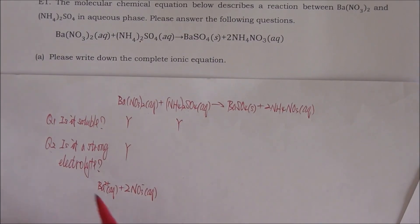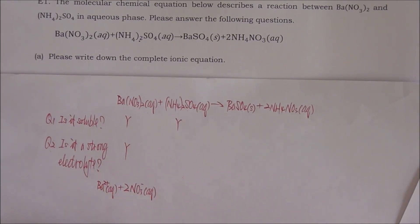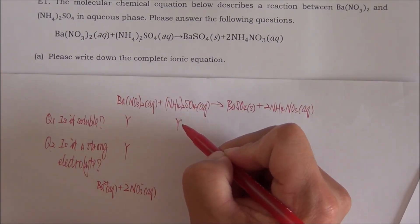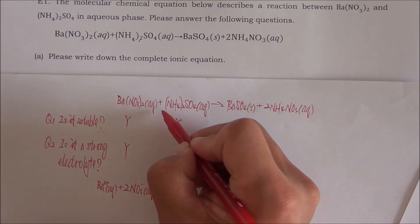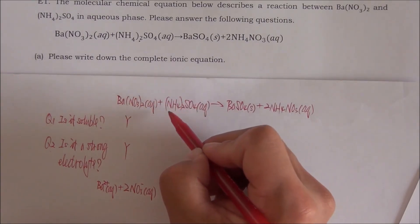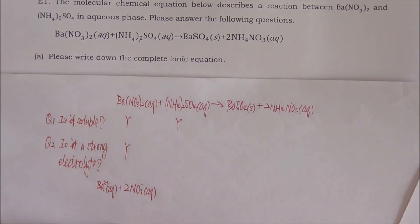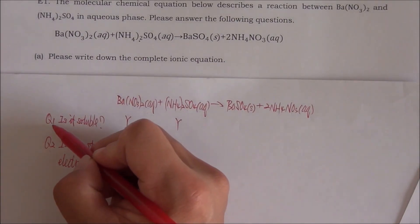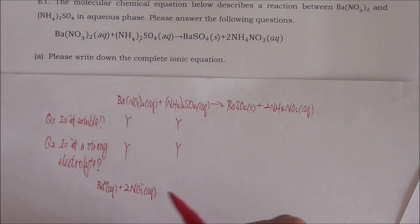Now question number two: is it a strong electrolyte? When determining whether a compound is ionic or molecular, we can treat the ammonium ion as a metal ion. Therefore, this is a combination of a metal ion and nonmetals — it must be an ionic compound, and all ionic compounds are strong electrolytes. The answer to question number two is yes. Since both answers are yes, we need to break this compound into its cation and anion.